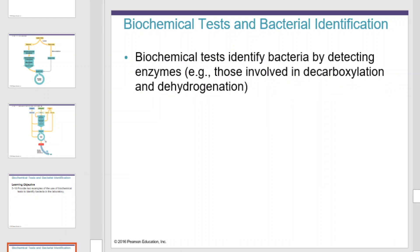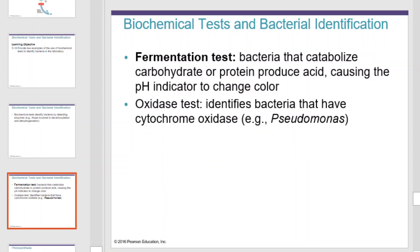Biochemical tests identify bacteria by detecting enzymes, such as those involved in decarboxylation and dehydrogenation. In the fermentation test, bacteria that catabolize carbohydrates or proteins produce acids, causing a pH indicator to change color. In the oxidase test, this can identify bacteria that have cytochrome oxidase, like Pseudomonas.